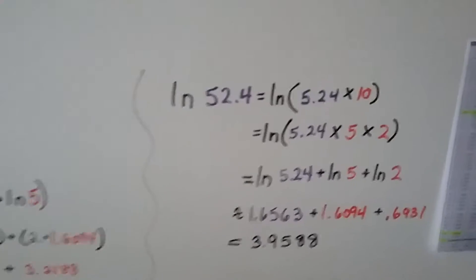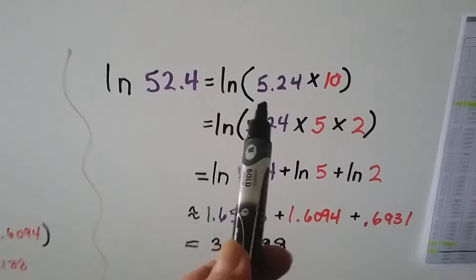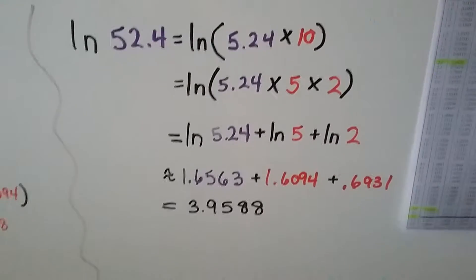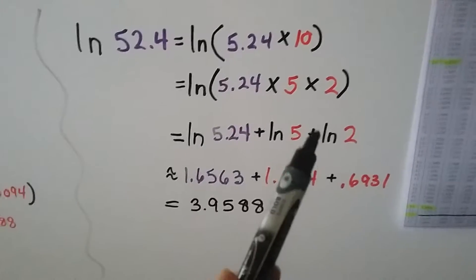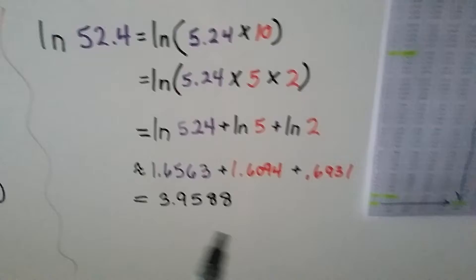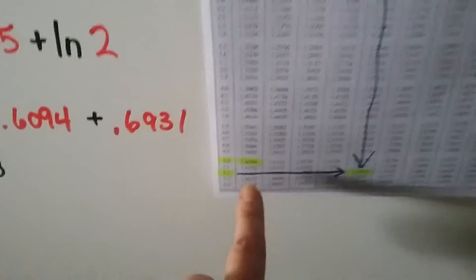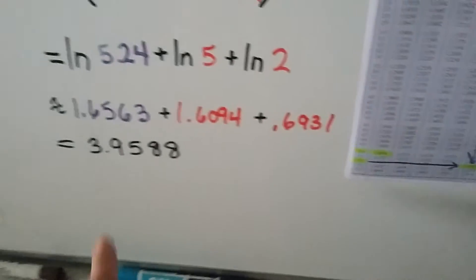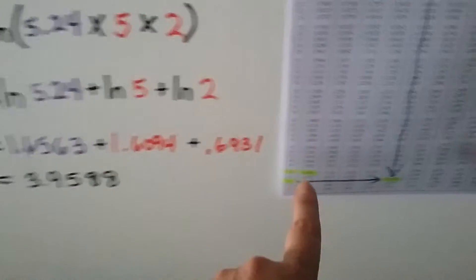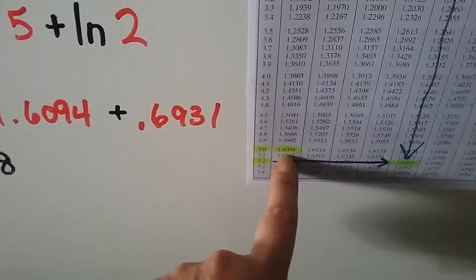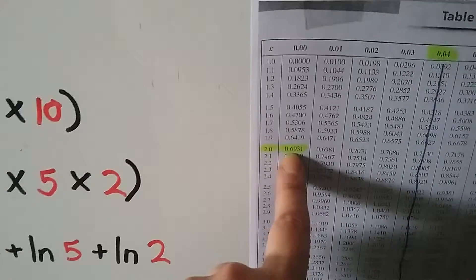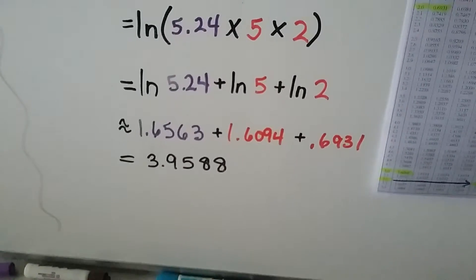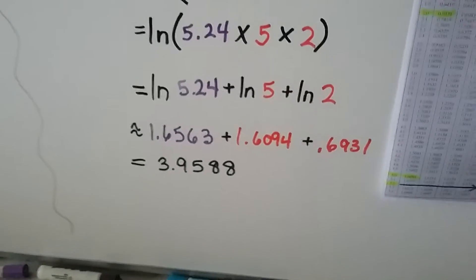Let's try it again. We've got the natural log of 52.4. We break it into scientific notation as 5.24 times 10, because we just moved it over one decimal place. We can break that 10 into a 5 and a 2. That means we have the natural log of 5.24 plus the natural log of 5 plus the natural log of 2. We look on our table and find 5.24. We've got 5.2 and then we go to the fourth column to get the 0.04. Then we find the natural log of 5, which is right here. Then we find the natural log of 2, which is right here. We add those together and get 3.9588, which rounds to 4.0 or 3.9, however you want to look at it.